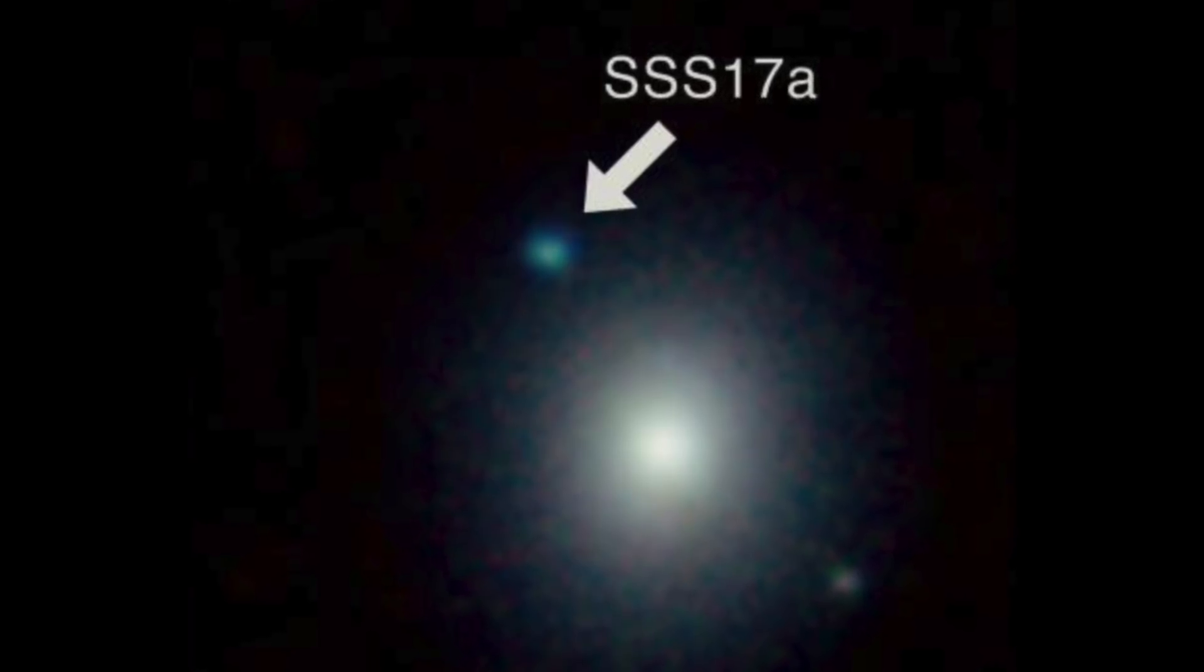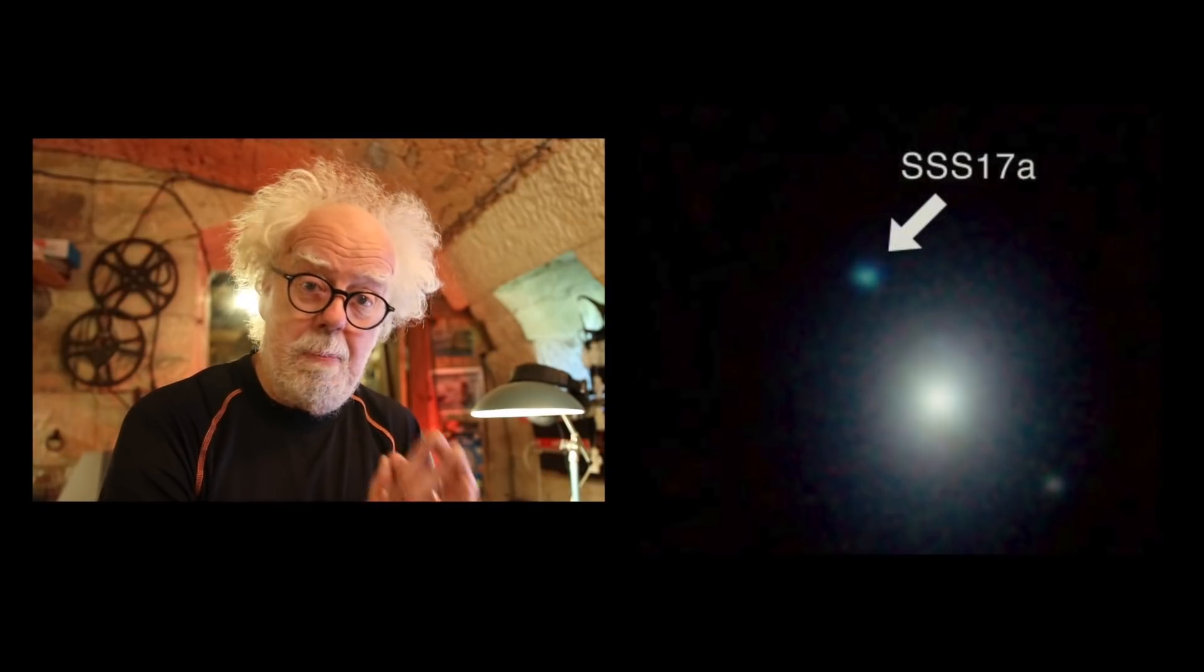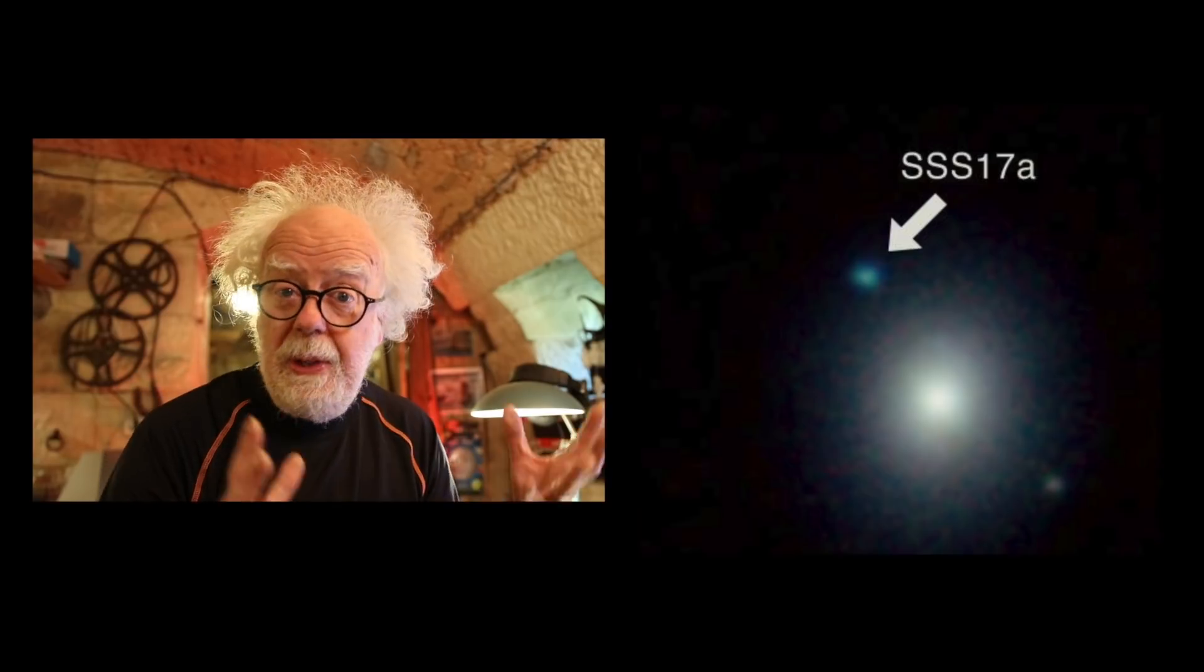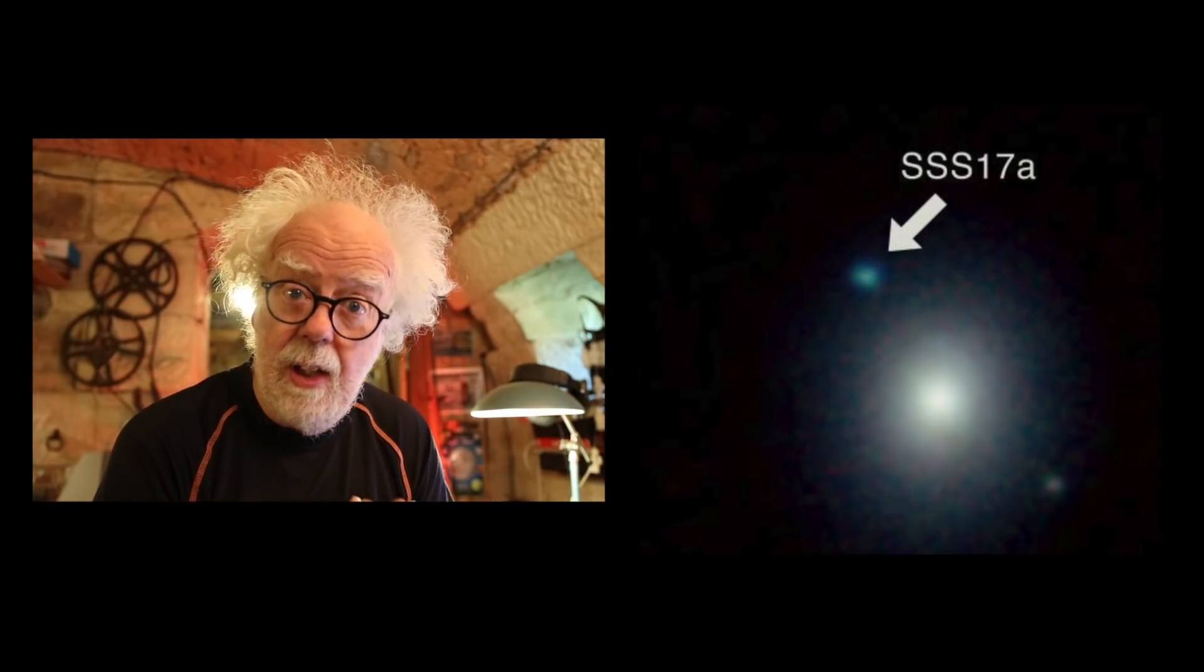Optical and infrared telescopes all around the world started looking to see if there was any optical evidence of this black hole collision. Dropping their schedules, which had been worked out years in advance, they turned massive telescopes all over the world to this distant galaxy. And yes, they found a new blob of light, optical wavelength, that was produced by these two black holes colliding.